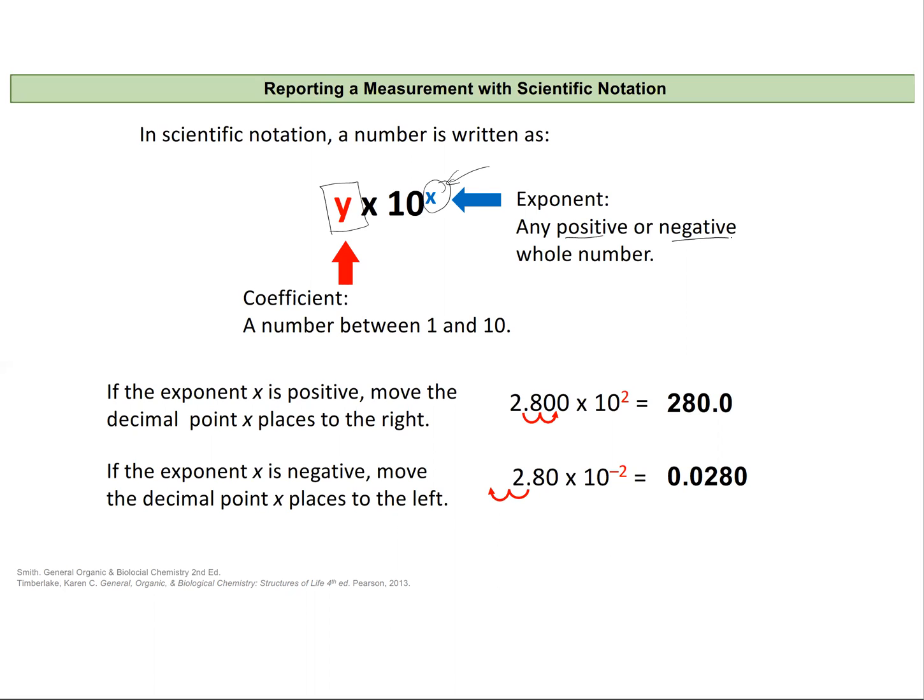If the exponent x is positive, then we're representing a large number. And if it's negative, then we're representing a very small number.